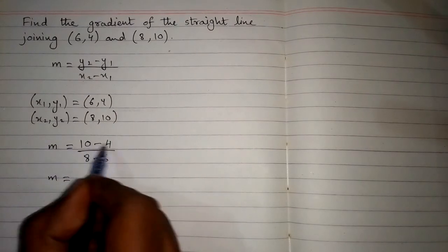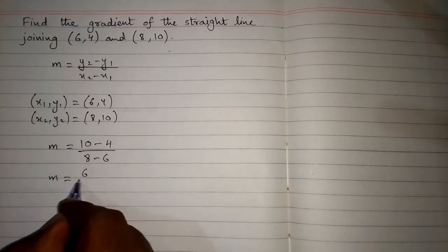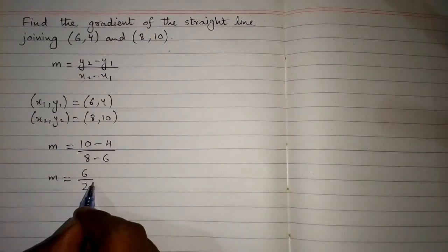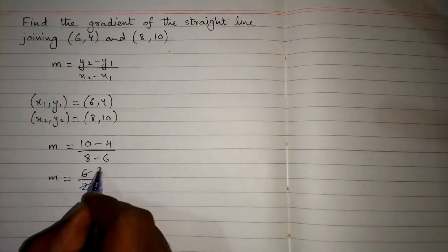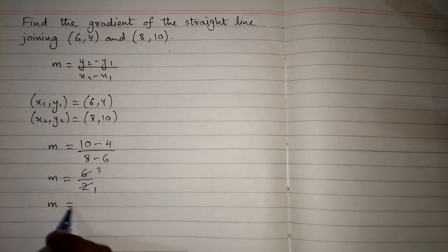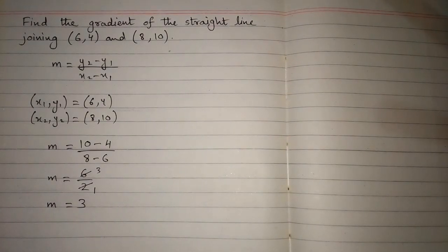Now 10 minus 4 is 6, and 8 minus 6 is 2, and 6 divided by 2 is 3. So the gradient is 3. This is the gradient of the line joining (6,4) and (8,10).